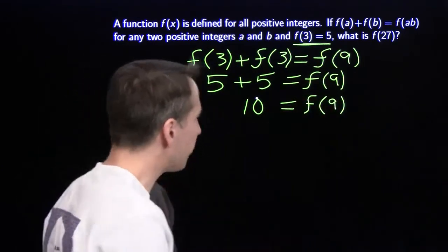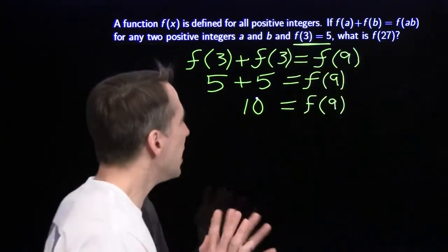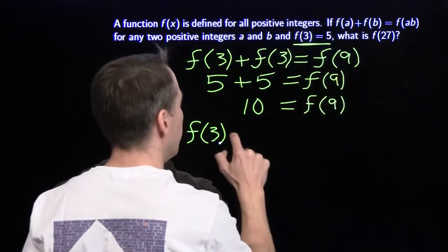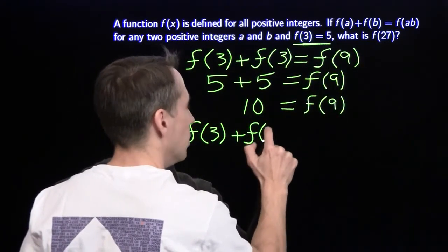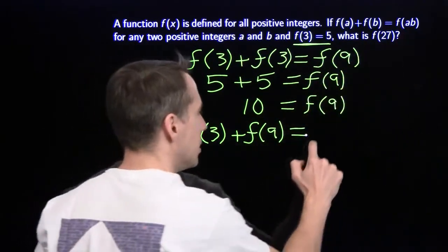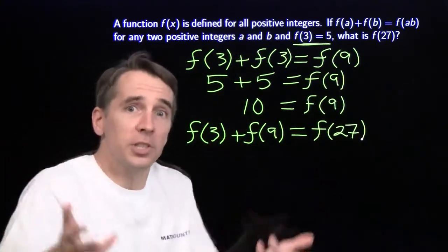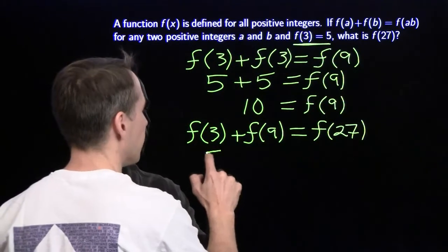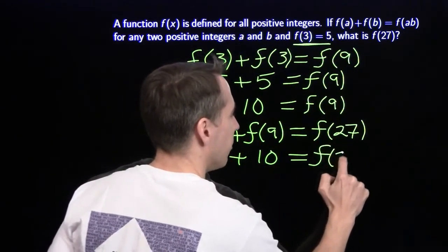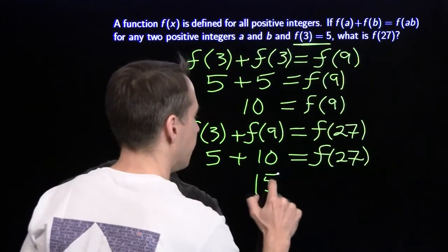Now I know f(9) and f(3). Conveniently, 3 times 9 is 27, so I see the path to the solution. Put a=3 and b=9. We know what each of those is, and on the other side we have f(27). So f(27) equals f(3) plus f(9), which is 5 plus 10, equals 15.